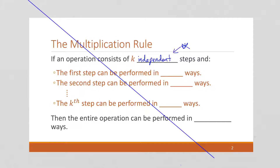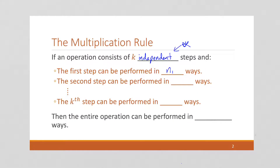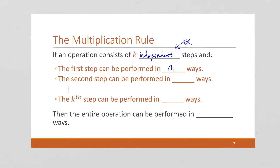So if the first step can be performed in n1 ways, the second step in n2 ways, and the kth step in n sub k ways, then the entire operation can be performed in n1 times n2 times all the way up to nk. We multiply those numbers together, and you're going to see why — we're going to do an example on the next slide.